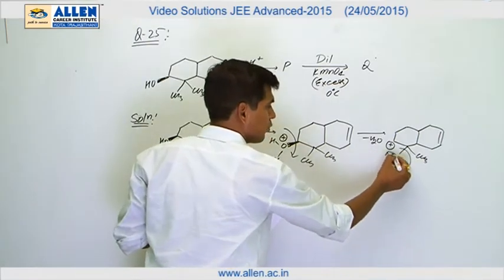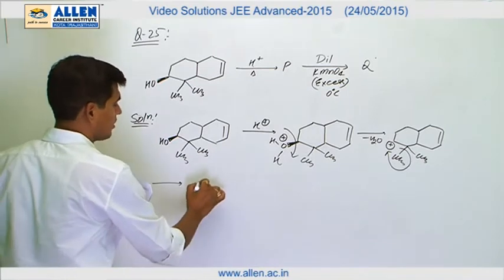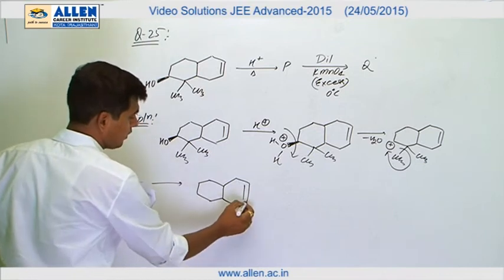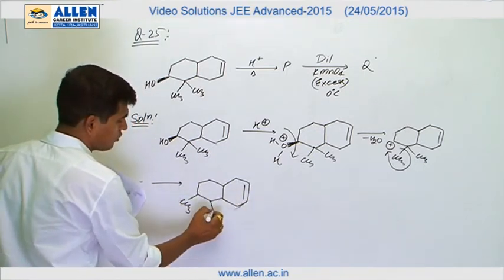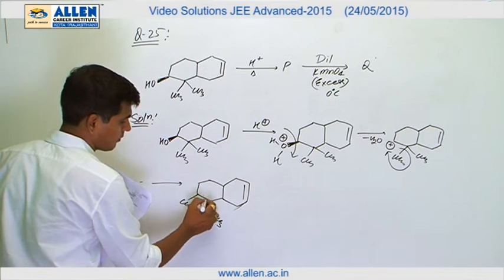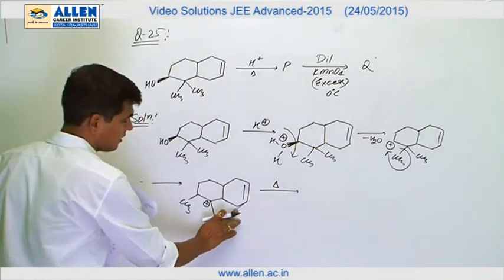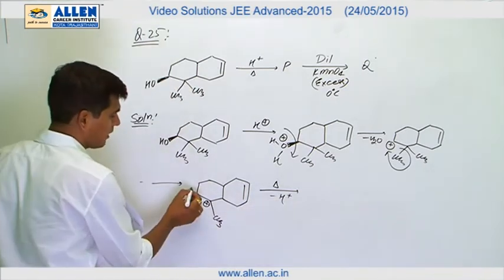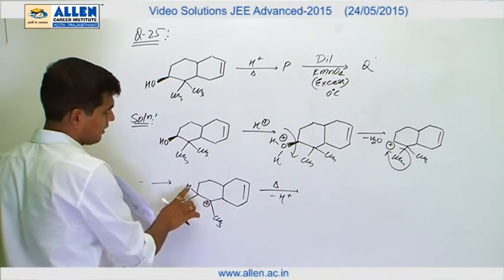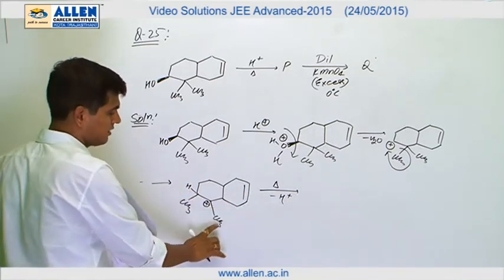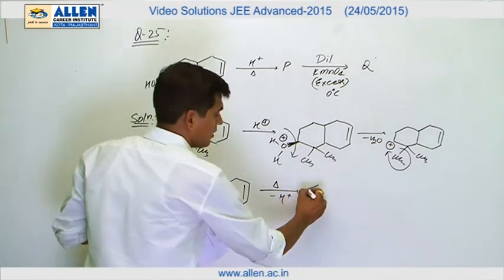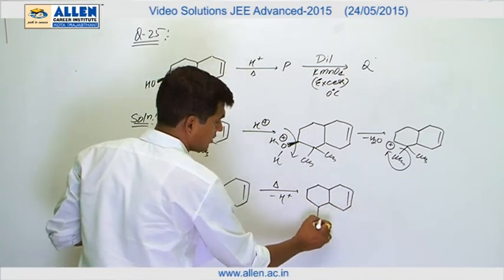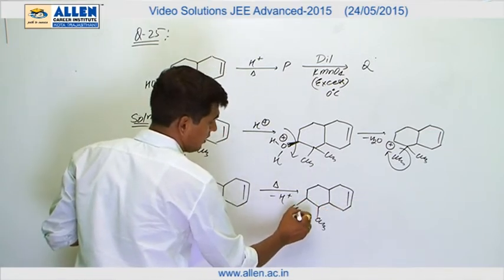There is a 1,2-methyl shift which makes it more stable. Now we have a new rearranged, more stable carbocation. Since heat is present, it's an E1 elimination. It loses H+, and there are three possibilities — it can lose H from this side, this side, or this side — so the product contains one more double bond in the left ring.